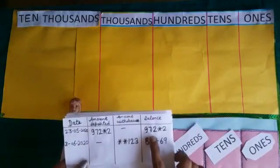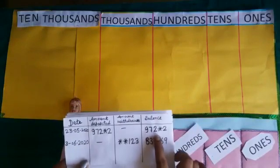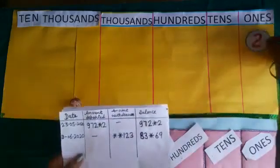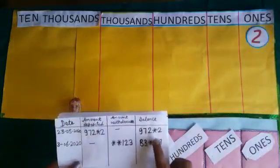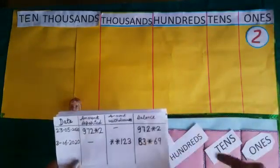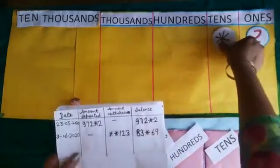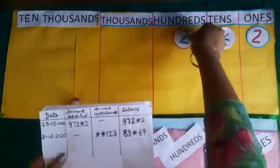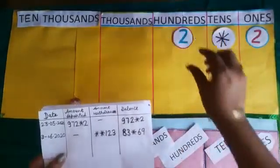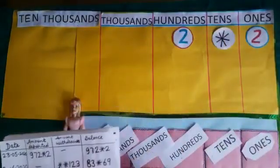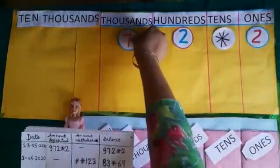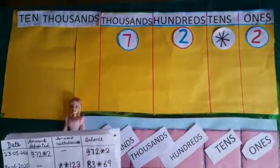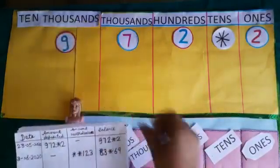Now, there is 97,202 rupees. We place 2 at the 1's place. There is nothing at the 10's place, so we place a star at the 10's place. 200 means we place 2 at the 100's place. And 7,000 means we place 7 at the 1,000's place. And 90,000 means we place 9 at the 10,000's place.